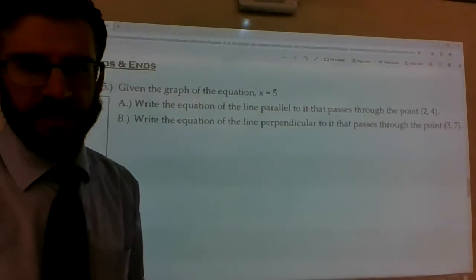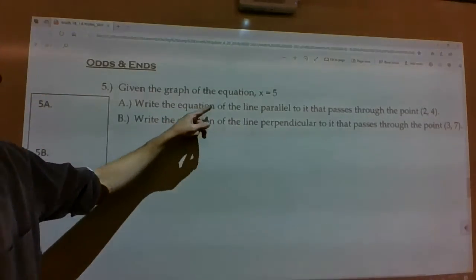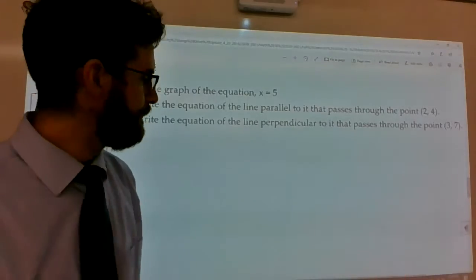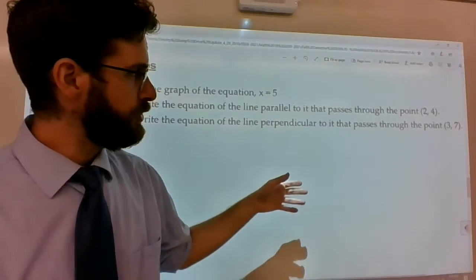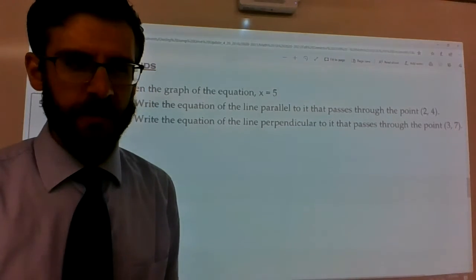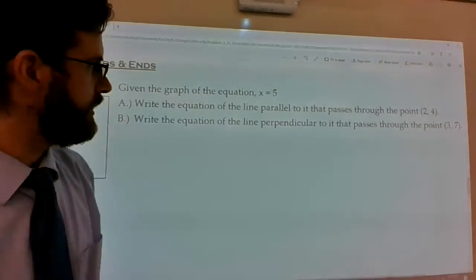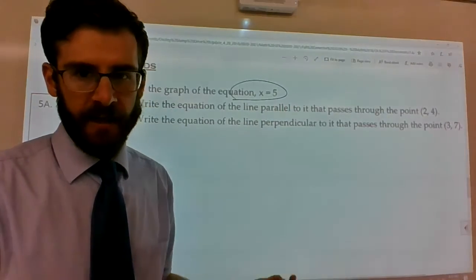Let's say you're given the graph of the equation x equals 5. What would the equation of the line parallel to it look like if we knew it passed through 2, 4? And what would the equation of the line perpendicular look like to it that passes through 3, 7? So the best way I can think to explain this is let's first just visualize the situation by looking at the graph of x equals 5.